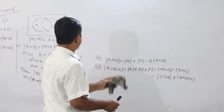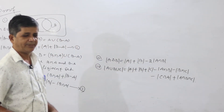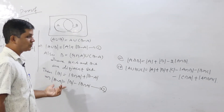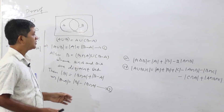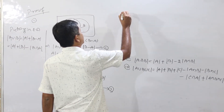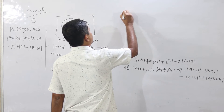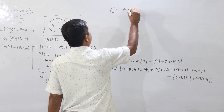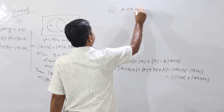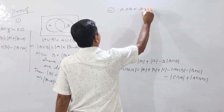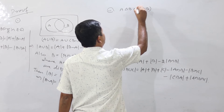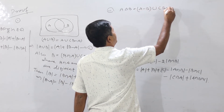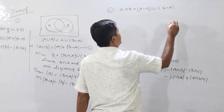The second result was already shown in equation 2. Now we move to the third result: A symmetric difference B, written as A Δ B.